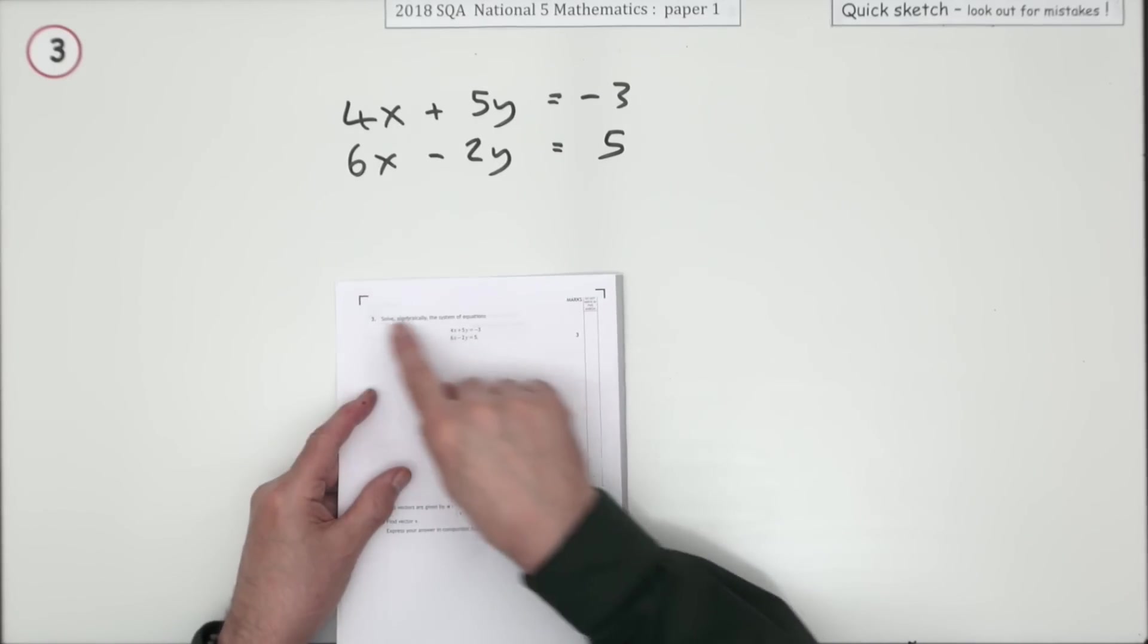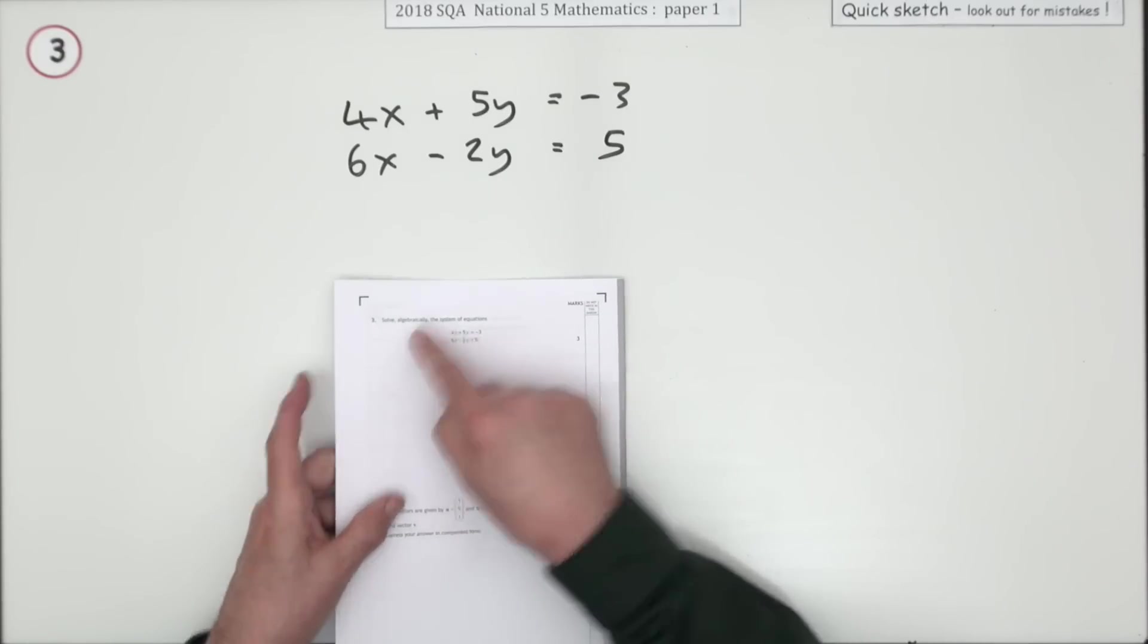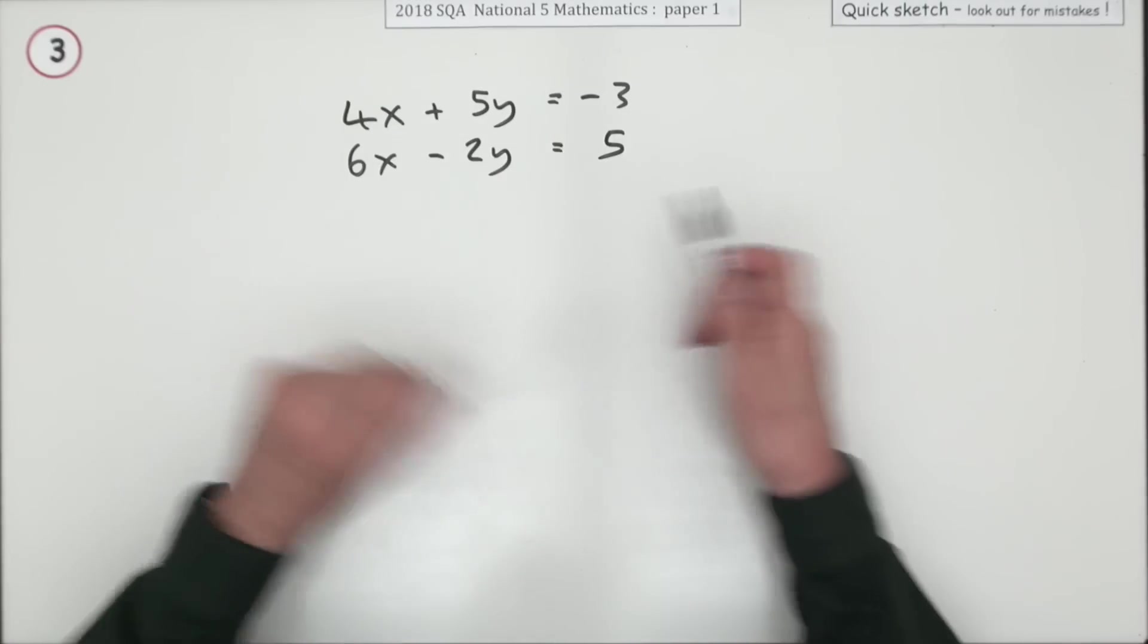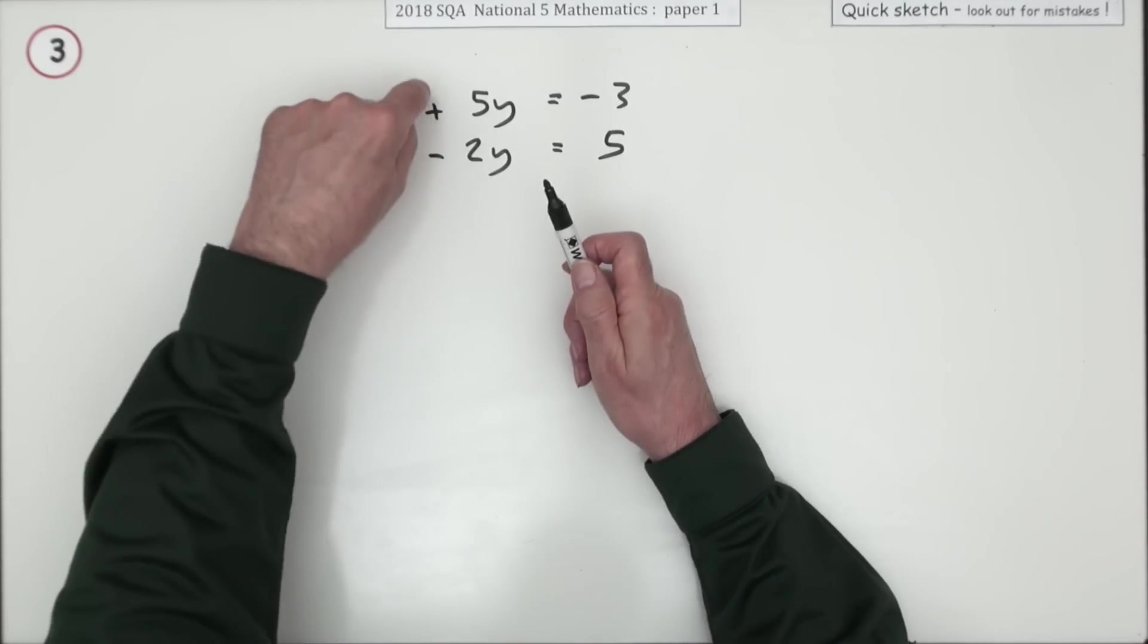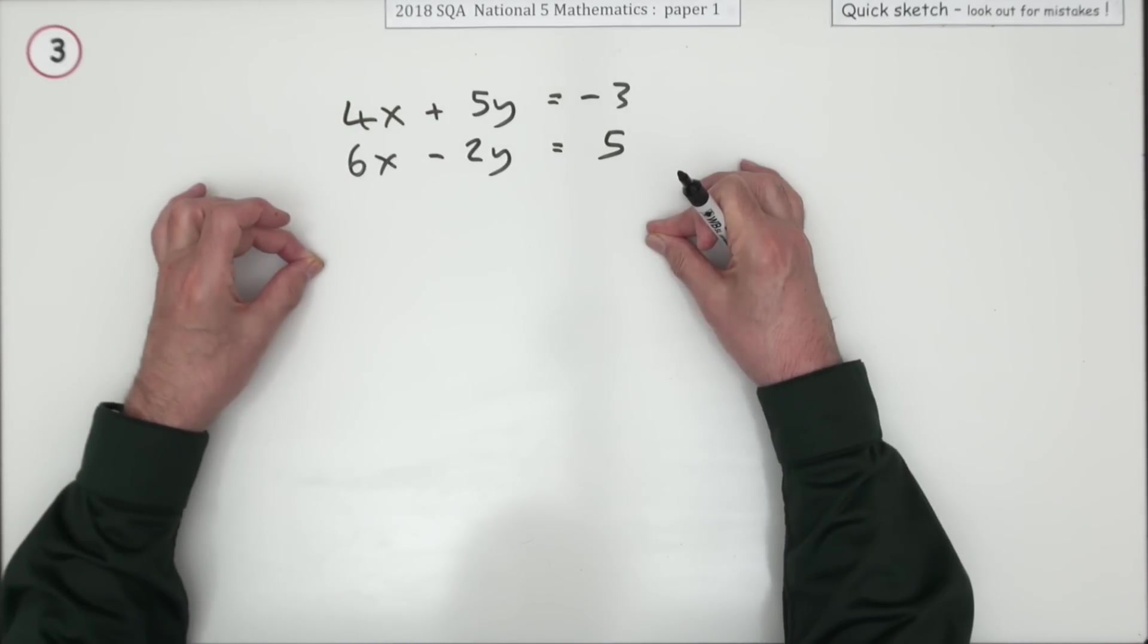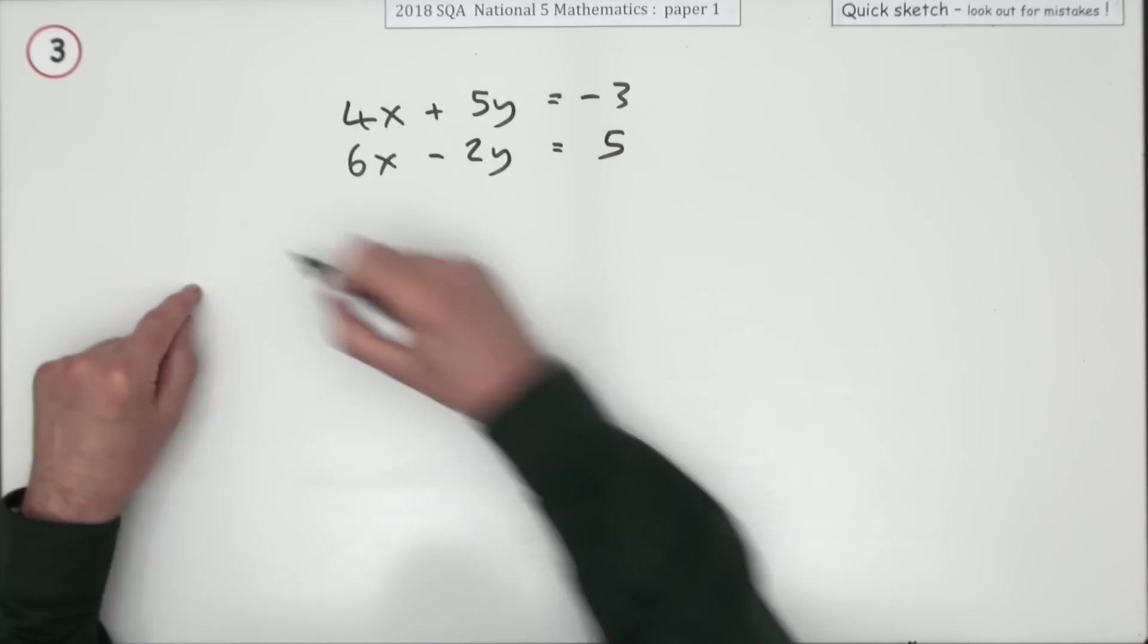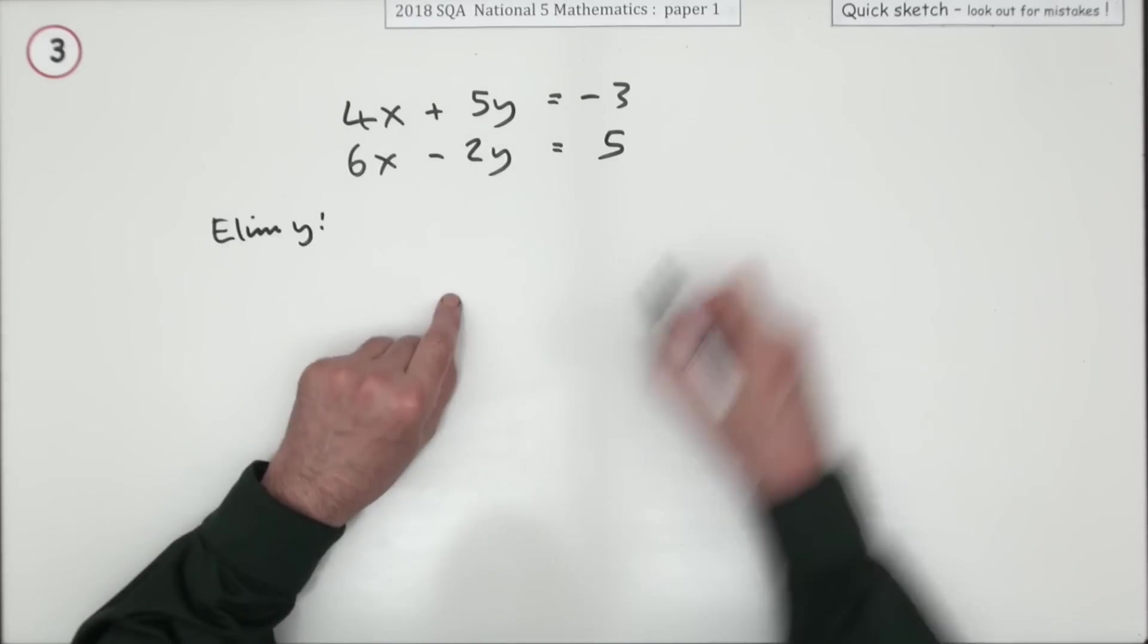And at number 3 it says solve algebraically this system of equations. Algebraically means you can't use trial and error, you'll have to show the steps. Well the first thing is to have a plan. Which one do you want to get rid of? It's always better to pick the ones that have got opposite signs, because then you can add them to make it disappear. That's always safer than subtracting them. So I think I will go for the y's here. So this is my plan, I'm going to eliminate y by doing this.